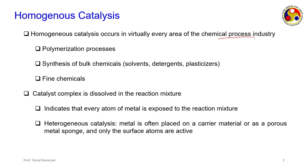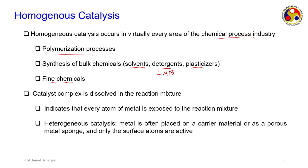Homogeneous catalysis is primarily used for various polymerization processes and synthesis of bulk chemicals. We will be taking up this module primarily for production of bulk chemicals such as various solvents, detergents, and plasticizers. One important detergent is linear alkylated benzene sulfonated (LAB). Plasticizers are additives made to improve polymer quality.